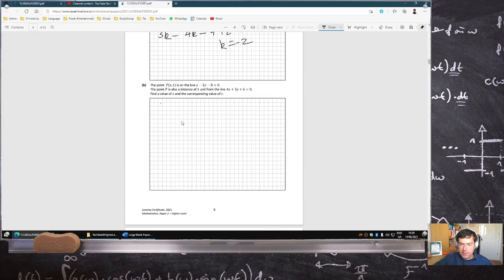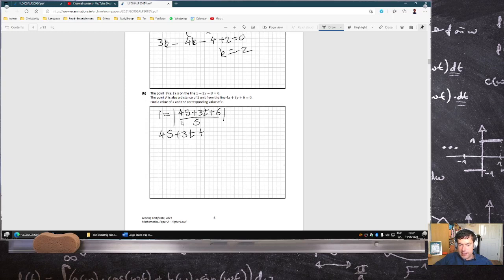So st is on this line, and also that st is one unit from that. So 1 equals absolute 4s plus 3t plus 6 over square root 4 squared plus 3 squared is 5. You only want a value, so you don't need to worry about the plus or minus. So that means 4s plus 3t plus 6 has to equal minus 1. And also st is on this line, so I can sub that in, and I get